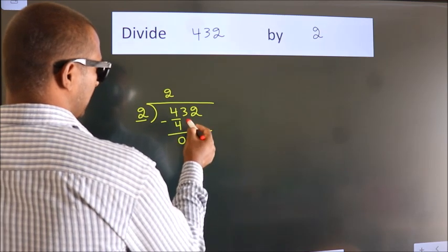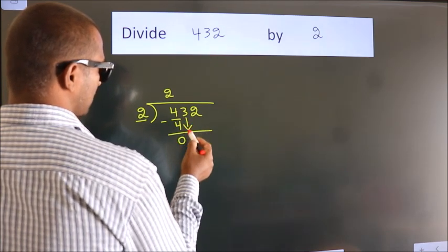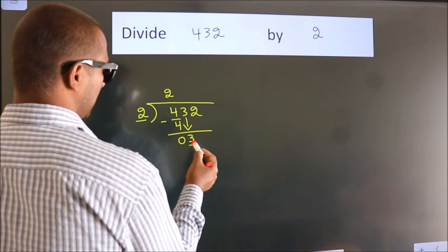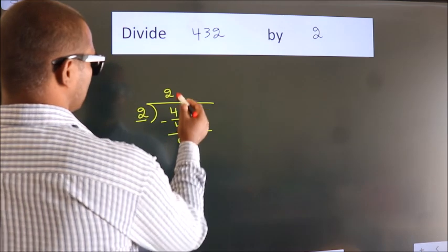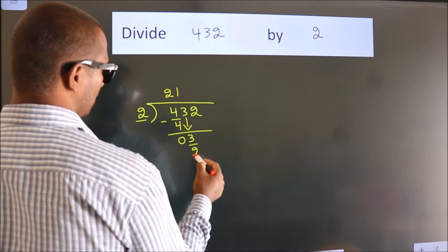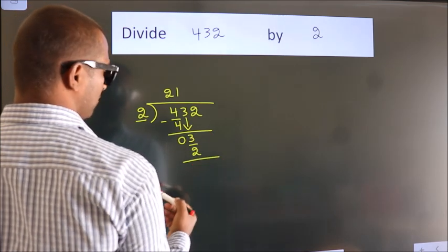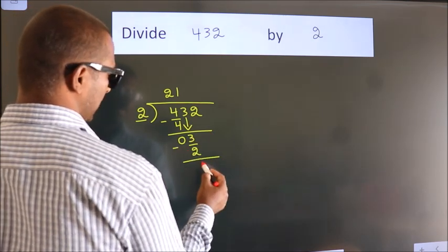After this, bring down the beside number. So 3 down. So 3. A number close to 3 in 2 table is 2 times 1, which is 2. Now we subtract. We get 1.